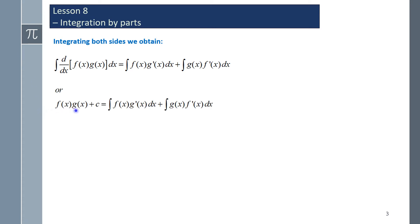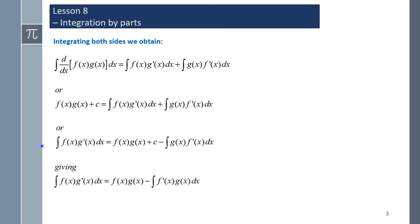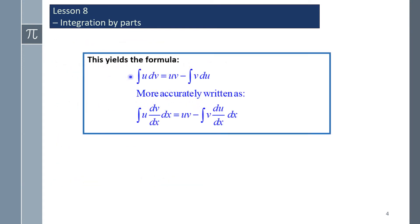The left-hand side results in f(x)·g(x) plus c, and the right-hand side we're keeping the same. If we rearrange by bringing one term to the left-hand side, this gives the integral of f(x)·g'(x) dx equals the product f(x)·g(x), minus the integral of f'(x)·g(x) dx. This yields the formula: the integral of u dv equals uv minus the integral of v du, more accurately written as the integral of u·(dv/dx) dx equals uv minus the integral of v·(du/dx) dx.